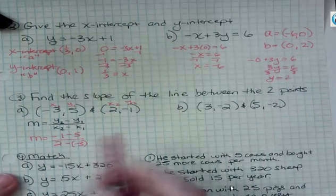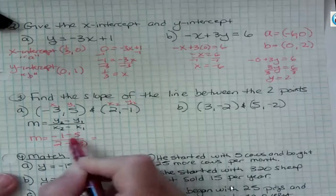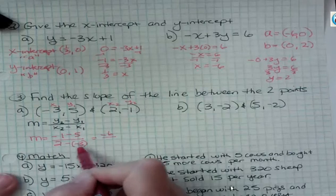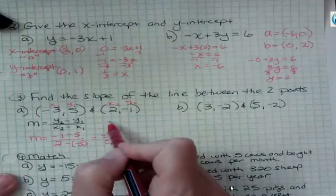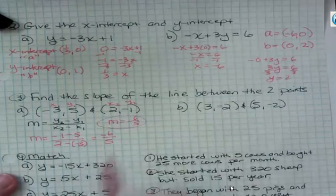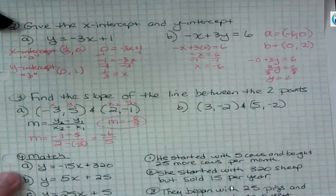And then we're going to just simplify that. Negative 1 minus 5 is negative 6, and 2 plus 3 is 5. So we would say our slope here is negative 6 fifths. That would be a line that falls from left to right. It's a decreasing line.